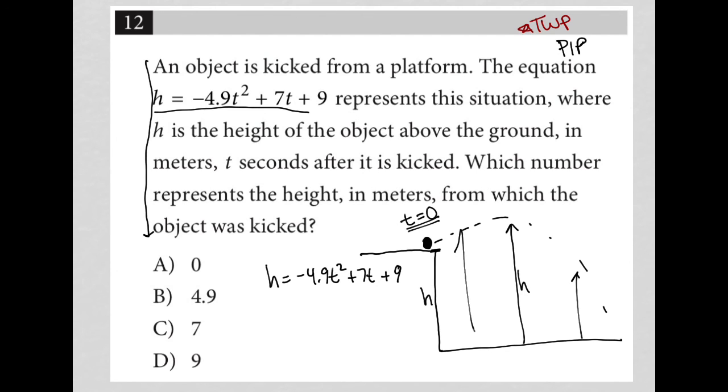So if T is equal to zero, then this whole thing becomes zero. This also becomes zero. And all we're left with is that H is equal to 9. So our answer here must be choice D.